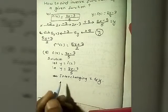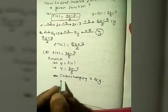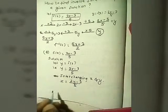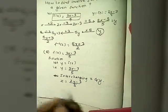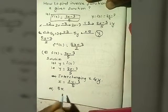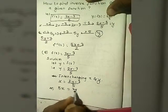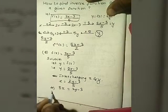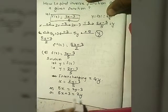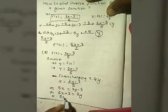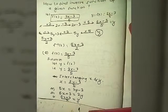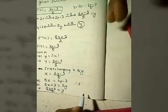After setting y equal to f of x, we interchange the positions of x and y, giving x equals 2y minus 3 divided by 5. Now we solve for y: multiplying both sides by 5 gives 5x equals 2y minus 3, then adding 3 gives 5x plus 3 equals 2y, so 5x plus 3 divided by 2 equals y.